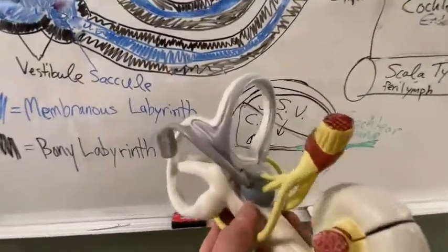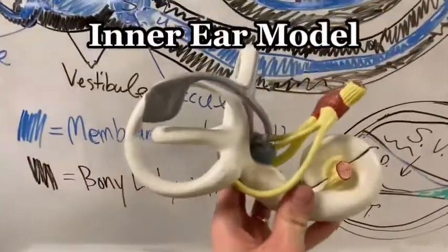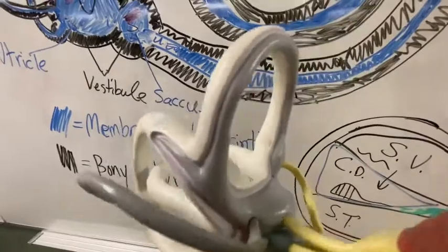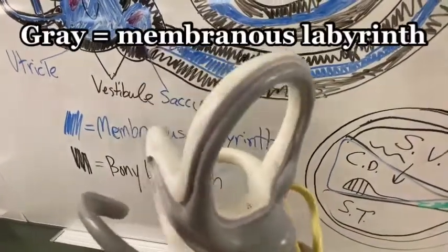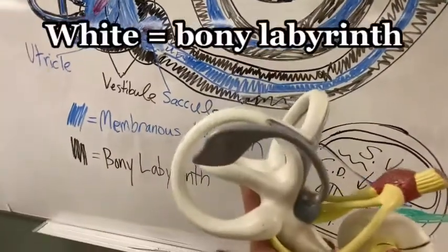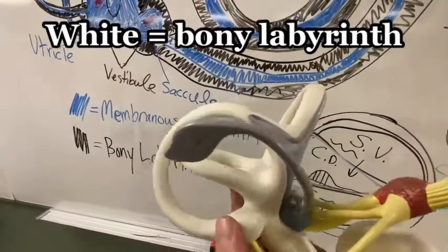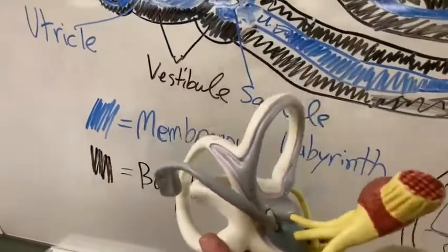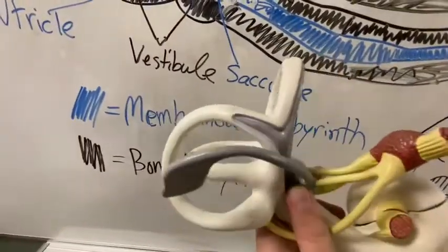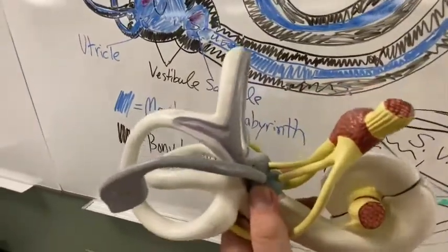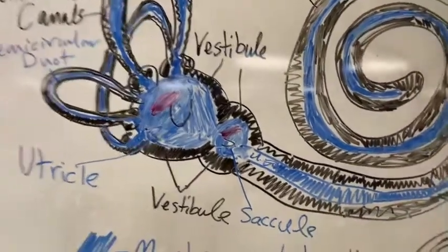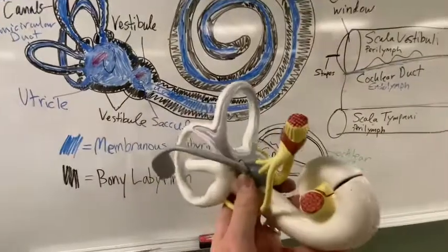To show what exactly the bony labyrinth is, here's another model. You can see the gray and the white — the gray is deeper and it's been uncovered by the white, but over here it's all white. The white parts are the bony labyrinth and the gray parts are the membranous labyrinth. See how the white parts completely cover the membranous labyrinth in 3D. With a 2D picture you can't see that, but with a 3D model you can.